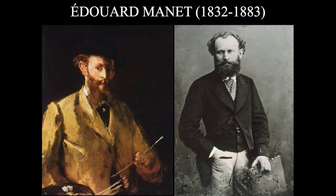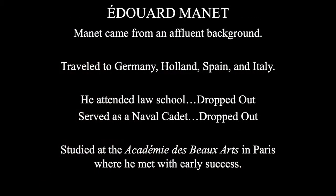Edward Manet doesn't have a very long life — he only lived until he was 51 years old. Manet came from an affluent background. He traveled extensively throughout Europe, visiting Germany, Holland, Spain, and Italy several times, which is the Mecca of art — home to both Renaissance and ancient Roman civilization. He attended law school for a while and dropped out, then served as a naval cadet and dropped out of that too. We're most interested in the six years he studied at the Académie des Beaux-Arts in Paris, where he met with very early success as a painter.